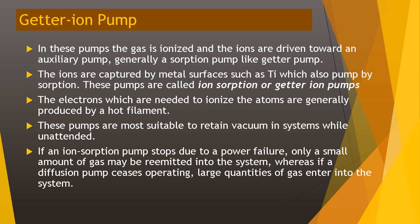The getter ion pump ionizes the gas and drives the ions toward an auxiliary getter pump, generally a sorption pump. The ions are captured by metal surfaces such as titanium, which also pump by sorption. These pumps are called ionsorption or getter ion pumps. The electrons needed to ionize the atoms are generally produced by a hot filament. These pumps are most suitable to retain vacuum in systems while unattended — if an ionsorption pump stops due to a power failure, only a small amount of gas may be re-emitted into the system, whereas if a diffusion pump ceases operating, large quantities of gas enter the system.